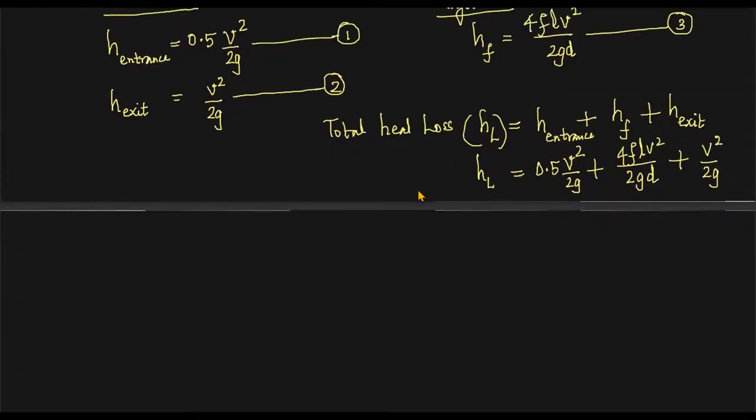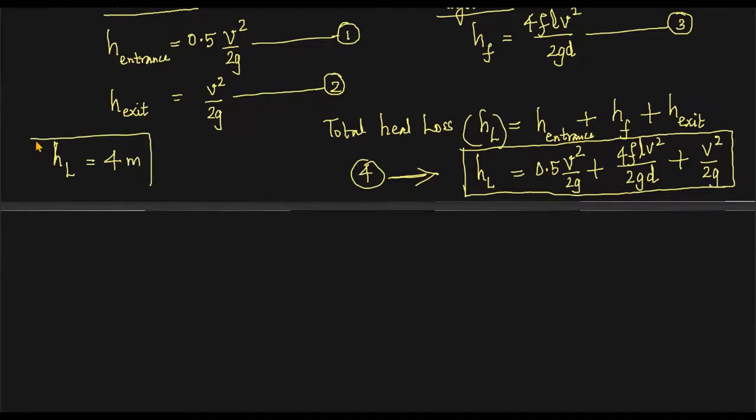The most important equation for our context is this one, equation number four. Centerline of the pipe to the water level in the tank, that is HL. That height, four meters, is completely lost. This is a very important idea here. The inlet head is completely lost in this problem. HL is four meters from the context, and HL is equal to sum of these three losses.